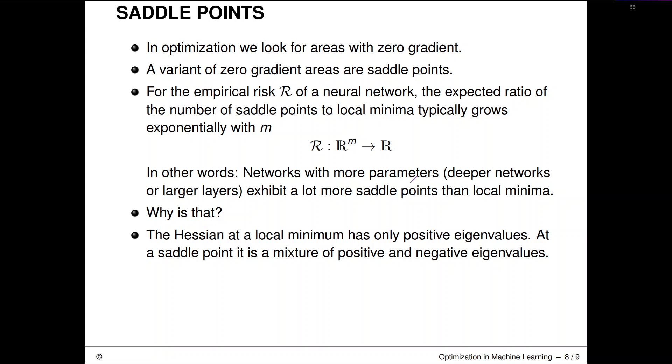If we now focus our attention on the error landscapes of neural networks, we can try to figure out the expected ratio between the number of saddle points and the number of local minima. This is not a simple analysis. There is an interesting paper by Dauphin which we are referencing on the next slide.